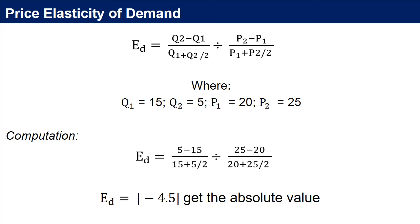Substituting the values in the formula: (5 minus 15) over (15 plus 5 over 2), divided by (25 minus 20) over (20 plus 25 over 2). The value of elasticity of demand is negative 4.5. Since the value of the coefficient is usually negative, get the absolute value and determine the degree of elasticity. If the value is greater than 1, that is elastic. If the value is less than 1, that is inelastic. If the value is equal to 1, that is unitary. In this case, the burger demand is elastic.